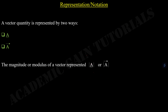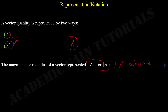Now let us see how we can represent vectors. A vector quantity is represented in two ways. If A is a vector, we can draw a line underneath the A to represent it as a vector, or we can add an arrow above the A, which is also a representation of a vector. The magnitude or modulus of a vector is represented by placing the vector inside absolute value signs. In this video session, we will mainly represent vectors by drawing an arrow above them.